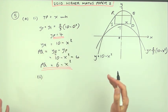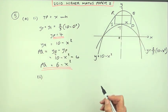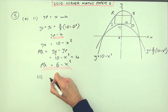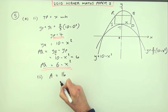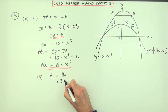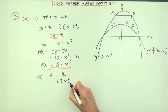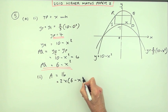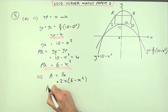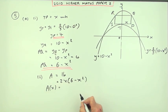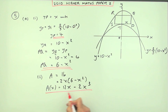The second part said, hence show the area is given by the expression there. Well, the area of the rectangle will simply be length times breadth. The length is 2x. The breadth is 6 minus x squared. So the area expressed in terms of x is going to be 12x minus 2x cubed. That'll be the third mark for part A.